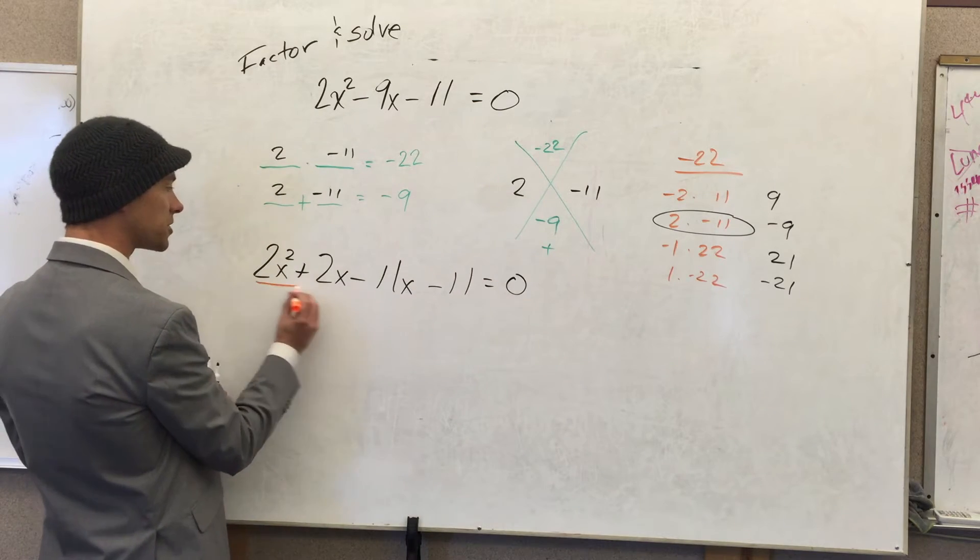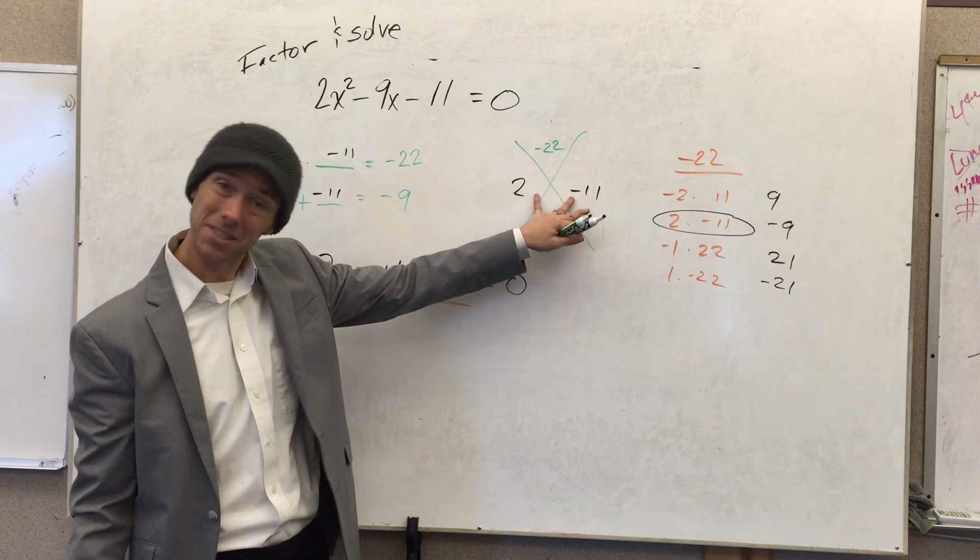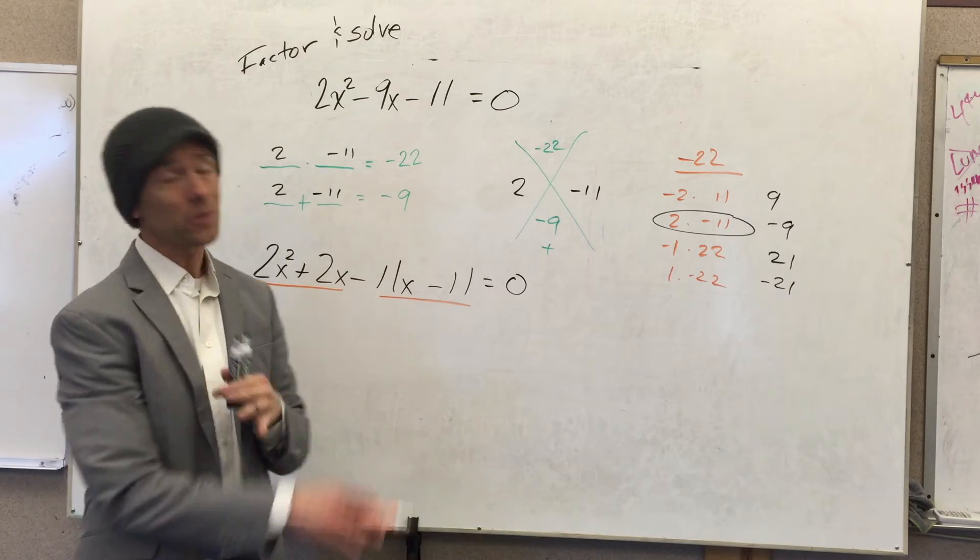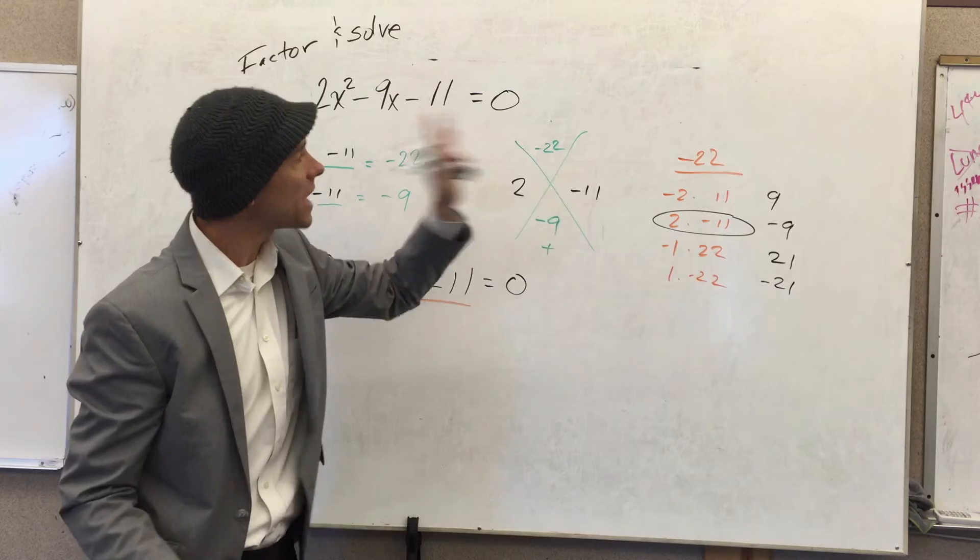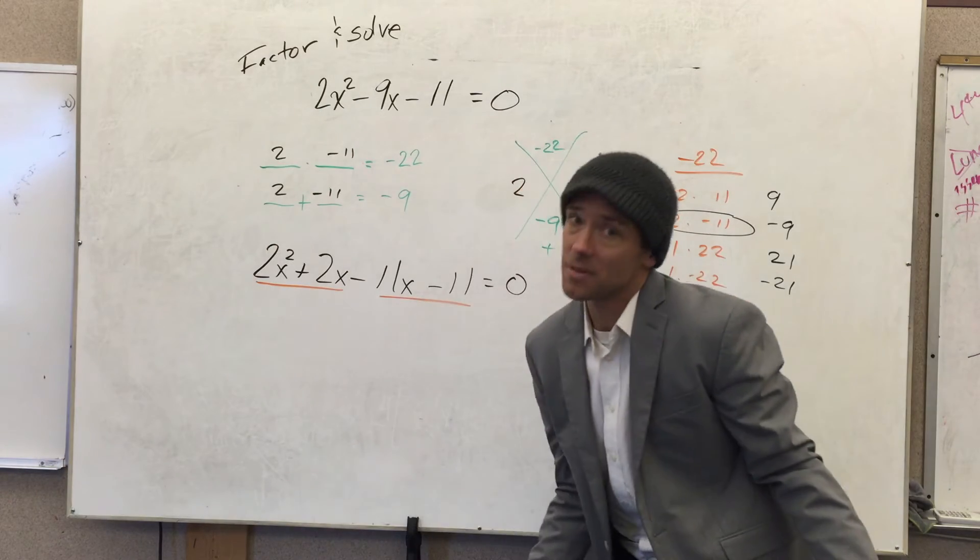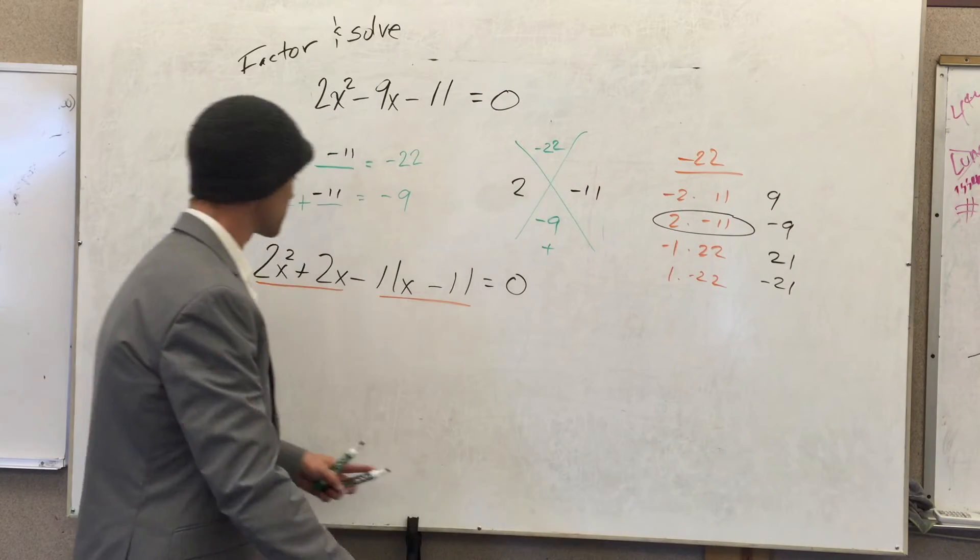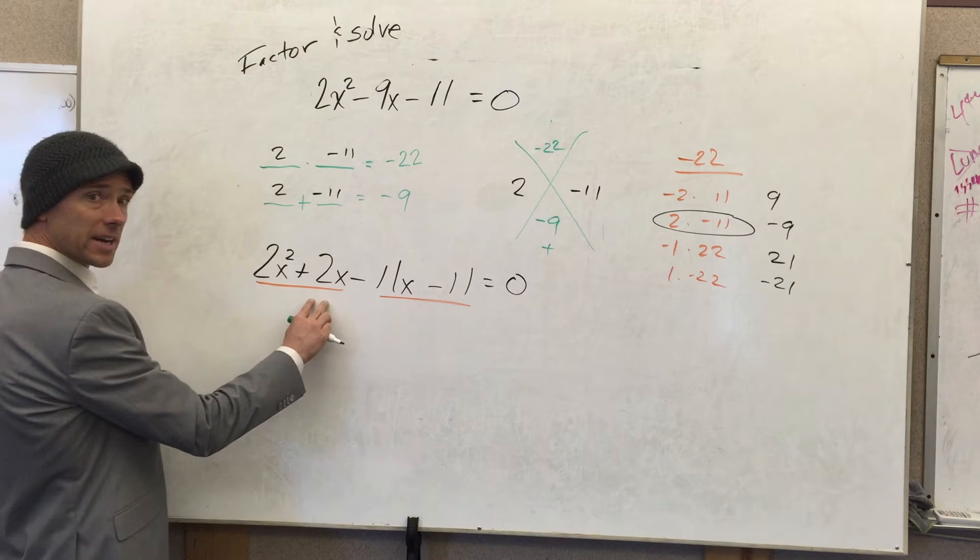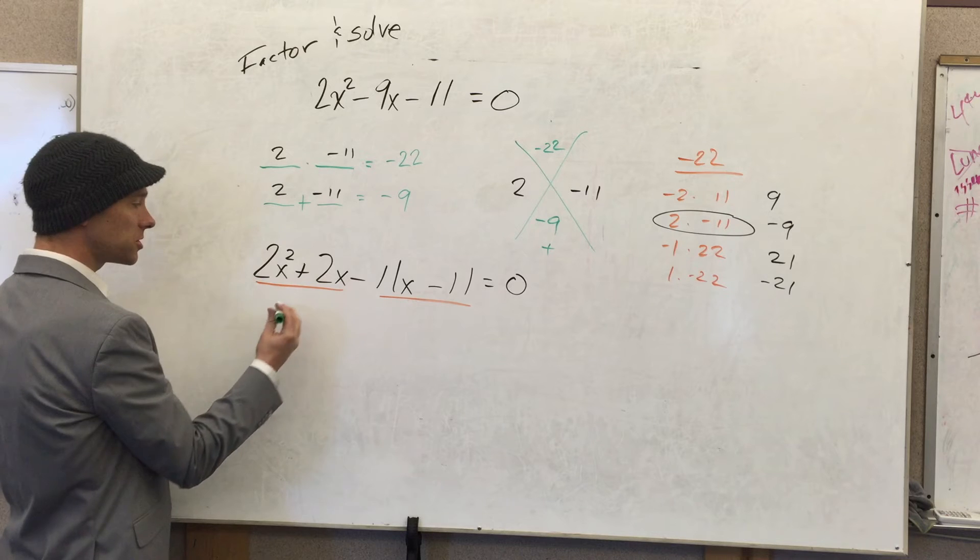If you're going to factor by grouping, the grouping is you take the front two terms and the back two terms. Assuming this puzzle has a solution, this step will always work. It will always get you to the answer. This is the stopping point if that puzzle doesn't have an answer. What we're going to do is take out a 2x—we're going to factor by greatest common factor.